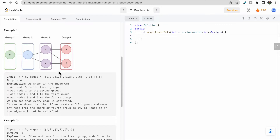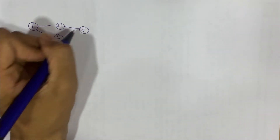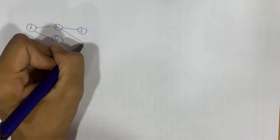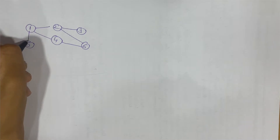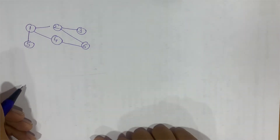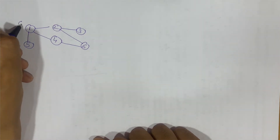Let's take a look at this example. We are given 6 nodes with edges forming a graph. We have node 1 connected to node 2, node 4, node 3, node 6, and there is an edge from 4 to 6, plus a separate node 5.